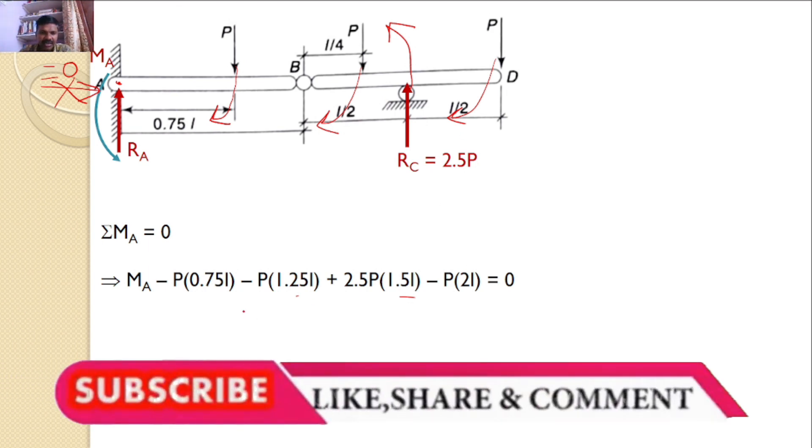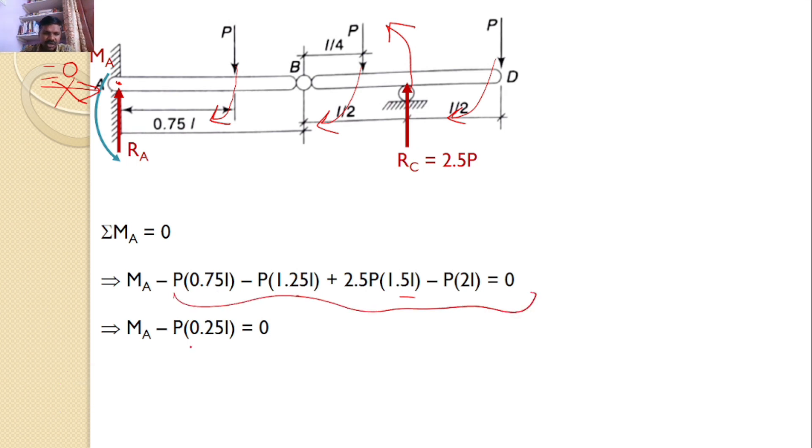I can simplify this. The total becomes minus P into 0.25 into L, or I can say Ma is equal to 0.25 into P L, is one of the answer for the given problem.